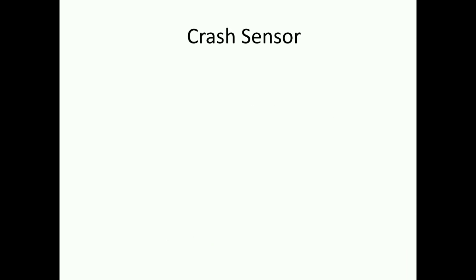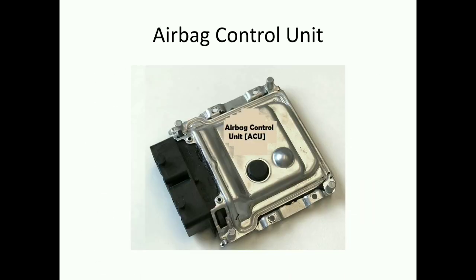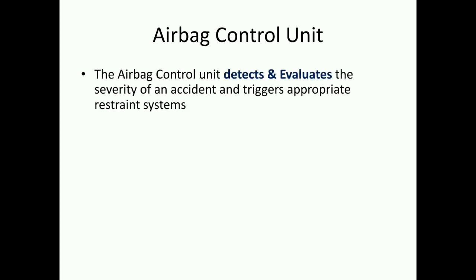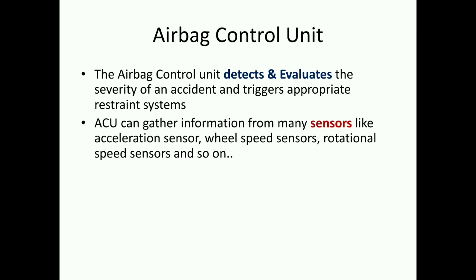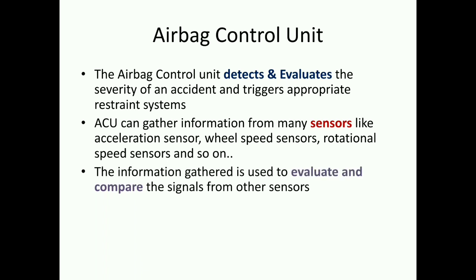This is how the airbag control unit — the ACU or ECU — looks. It has hydraulic and electronic components attached to each other. The airbag control unit detects and evaluates the severity of an accident and triggers the appropriate restraint system. Once the sensor sends the signal to the ACU, the ACU evaluates how severe the accident is. If it is more severe, it will immediately order the airbag to deploy. The ACU gathers information from many sensors: acceleration sensor, wheel speed sensor, rotational speed sensor, and so on.